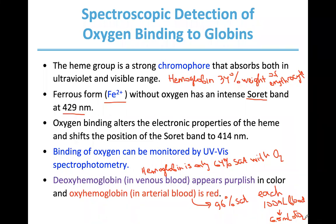Erythrocytes are very interesting cells. In their maturation process they lose all organelles: nucleus, mitochondria, endoplasmic reticulum. They are essentially incomplete cells whose only function is to carry hemoglobin with and without oxygen throughout the systemic circulation. They live for about 120 days, after which new erythrocytes are born to replace the dying ones.